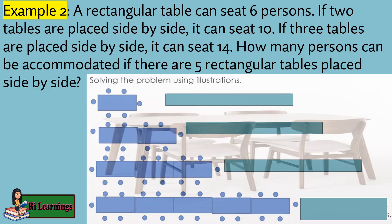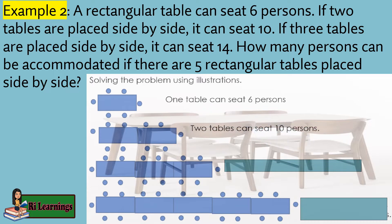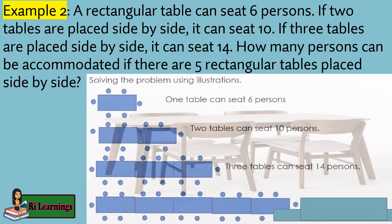Example 2: A rectangular table can seat 6 persons. If 2 tables are placed side by side, it can seat 10. If 3 tables are placed side by side, it can seat 14. How many persons can be accommodated if there are 5 rectangular tables placed side by side? 5 tables can seat 22 persons.